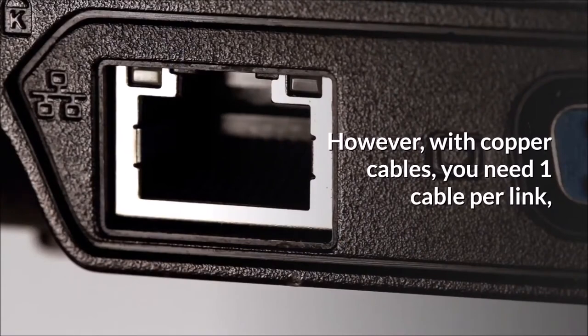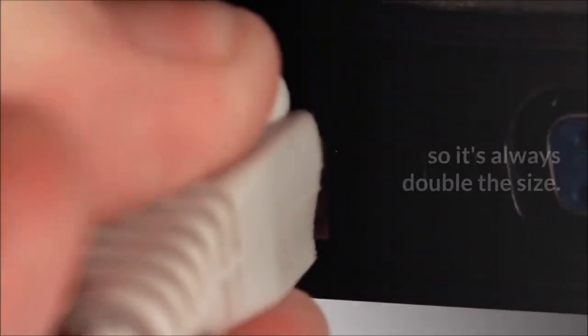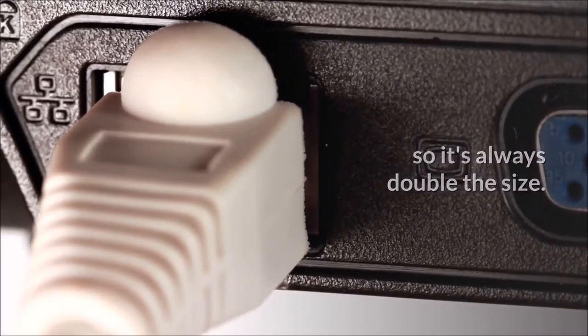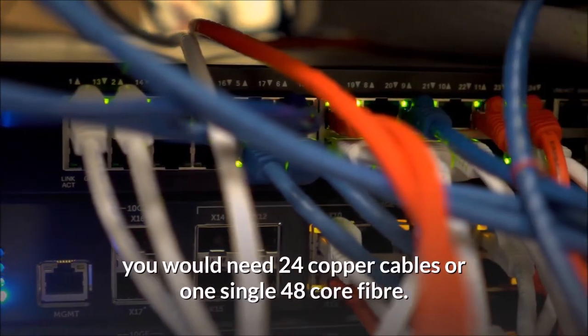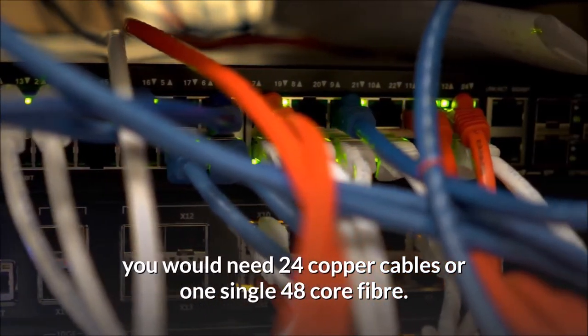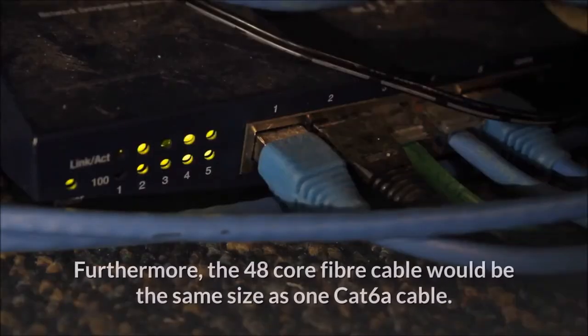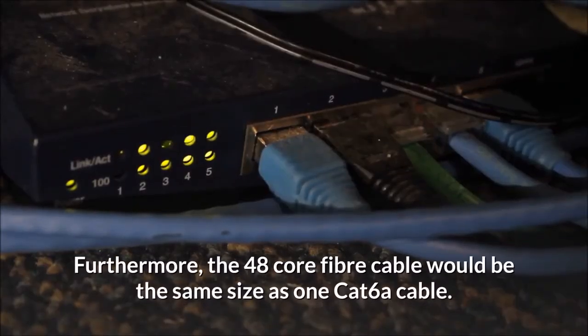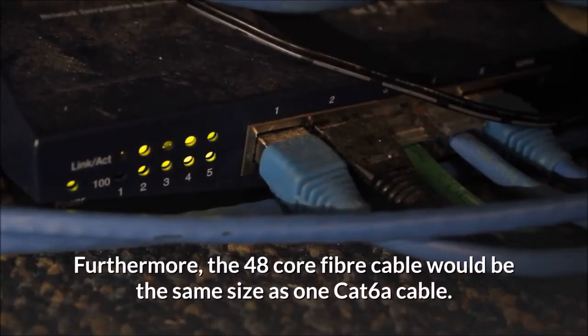However, with copper cables, you need one cable per link, so it's always double the size. For example, for a 24-way link, you would need 24 copper cables or one single 48-core fiber. Furthermore, the 48-core fiber cable would be the same size as one CAT-6A cable.